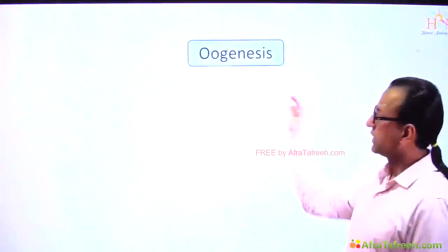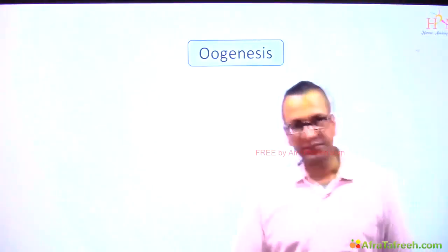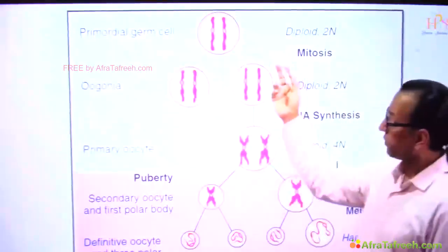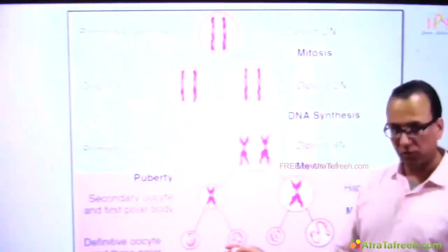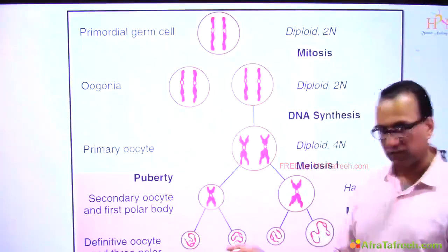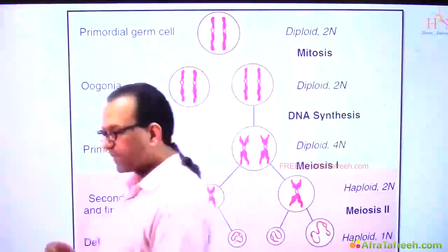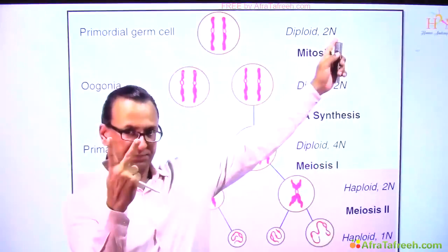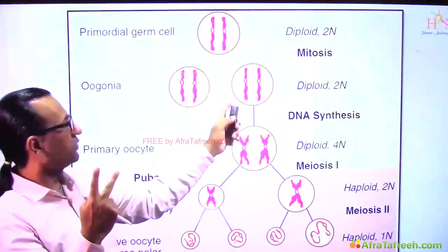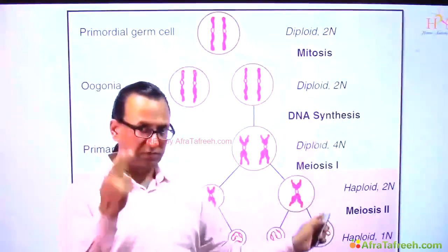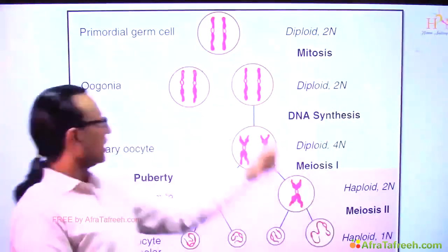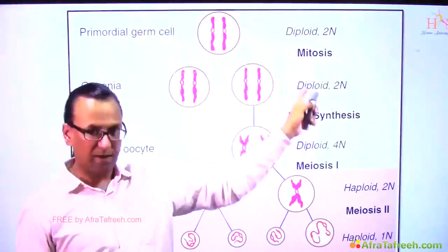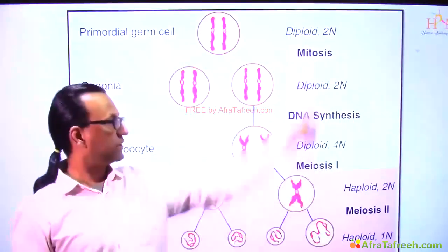Next we are looking at some details of oogenesis. In oogenesis we are going to talk about meiosis I and meiosis II and some change of chromosome numbers as well. In the beginning we have a primordial germ cell, which is a diploid cell with two units of DNA, but as it is going to enter meiosis it must duplicate the DNA. The primordial germ cell gives you oogonium, and during that process mitosis is happening, but beyond that meiosis is starting.